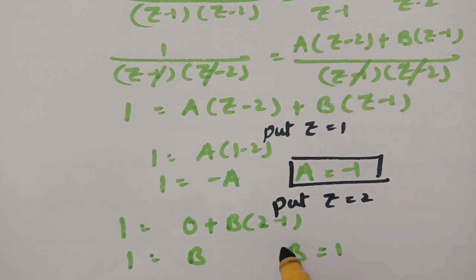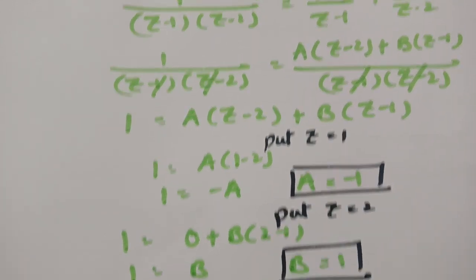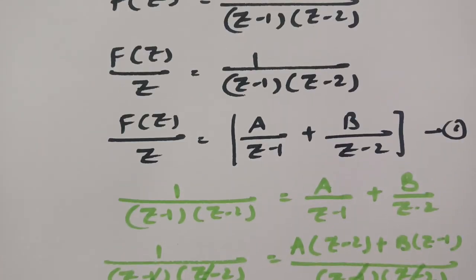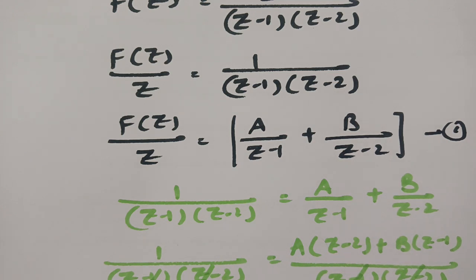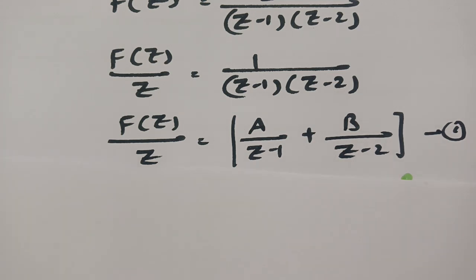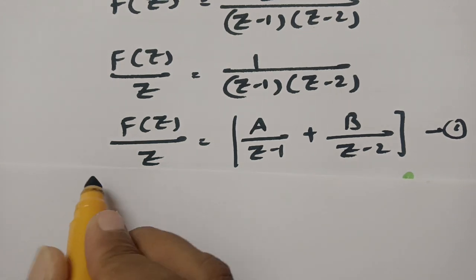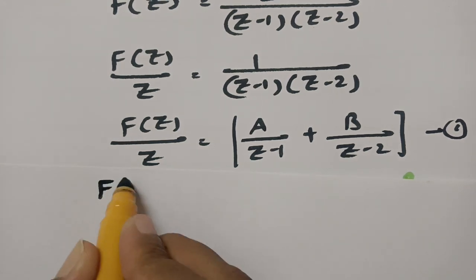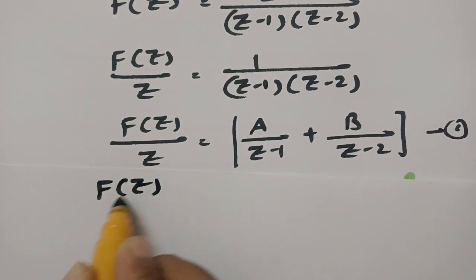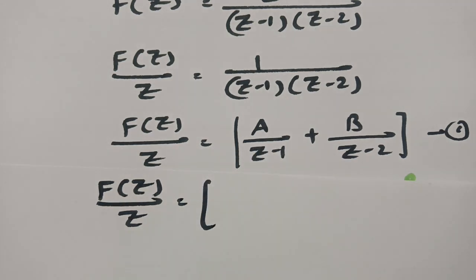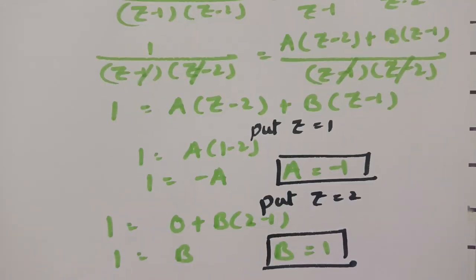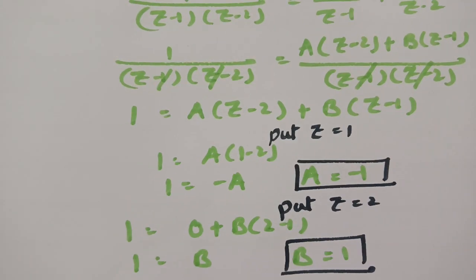After getting A and B values, now I will substitute in equation 1. According to equation 1, F of Z by Z is equal to — our A value, just found, is minus 1.